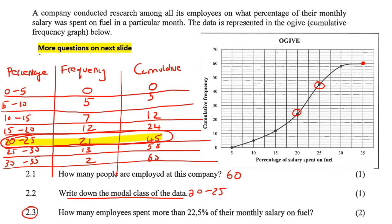The next question asks: how many employees spent more than 22.5% of their monthly salary on fuel? So we go to 22.5 on the x-axis, which is exactly in between, then go up to where it meets the graph, and then go across to the y-axis. That comes out at 34.